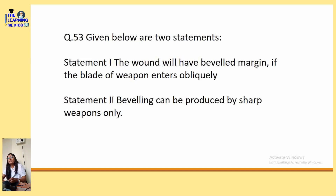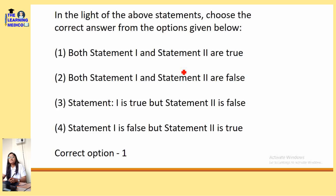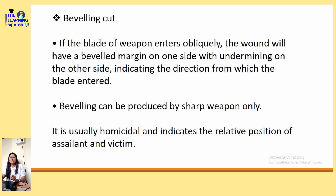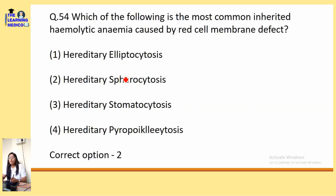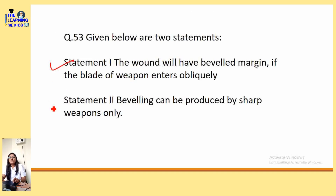Beveling cut: if the blade of the weapon enters obliquely, the wound will have a beveled margin on one side with undermining on the other side, indicating the direction from which the blade enters. Beveling can be produced by sharp weapons only. It is usually homicidal and indicates the relative position of assailant and victim. Both statements 1 and 2 are correct.